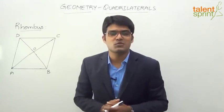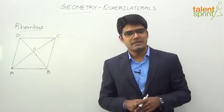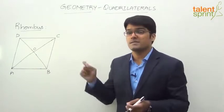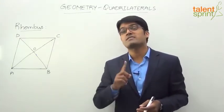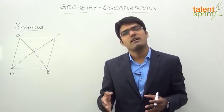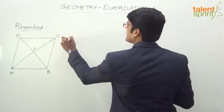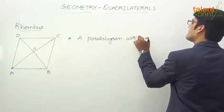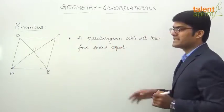Let us now discuss the next special case of parallelogram, which is a rhombus. The figure ABCD represents a rhombus. As mentioned earlier, all rhombuses are parallelograms — they are special parallelograms. What is special about this parallelogram? Here, all the four sides are equal. So, a parallelogram where all four sides are equal is called a rhombus. In case of a rectangle, a parallelogram has all four angles equal; in a rhombus, all four sides are equal.